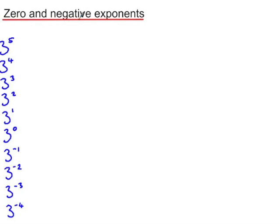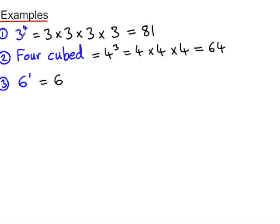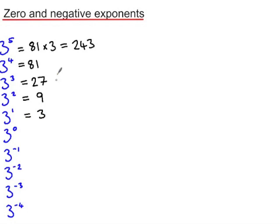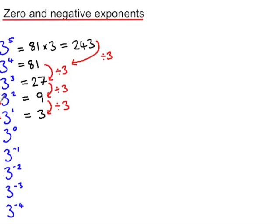We're now going to look at zero and negative exponents. Using a base of three — though you could use any base — we saw that three to the power of four is eighty-one. So three to the power of five is eighty-one multiplied by three, which is two hundred and forty-three. Three cubed is twenty-seven, three squared is nine, and three to the power of one is three. As we reduce the power by one, to get from two hundred and forty-three to eighty-one we divide by three, and similarly from eighty-one to twenty-seven, twenty-seven to nine, and nine to three — each step divides by three.